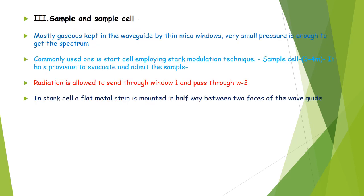The sample and the sample cells usually, the samples are gas, gas materials are placed. And very small amount of pressure is enough to get the spectrum. Commonly a Stark modulation technique is used there inside the cell. The sample cell usually will have 3 to 4 meter. It can have a provision to evacuate. The radiation is allowed to pass through window 1 and pass out window 2.